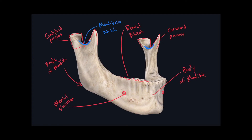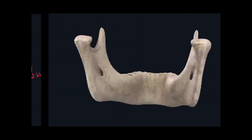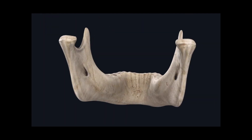The condyloid process can also be separated into two landmarks. The most superior portion of the condyloid process is called the head of the mandible, located on both sides. There is also a narrowing just beneath the head called the neck of the mandible. So the mandible is unique in having two heads and two necks on one bone. Finally, on the medial side of each ramus we have two holes — one here and one here — called mandibular foramen.